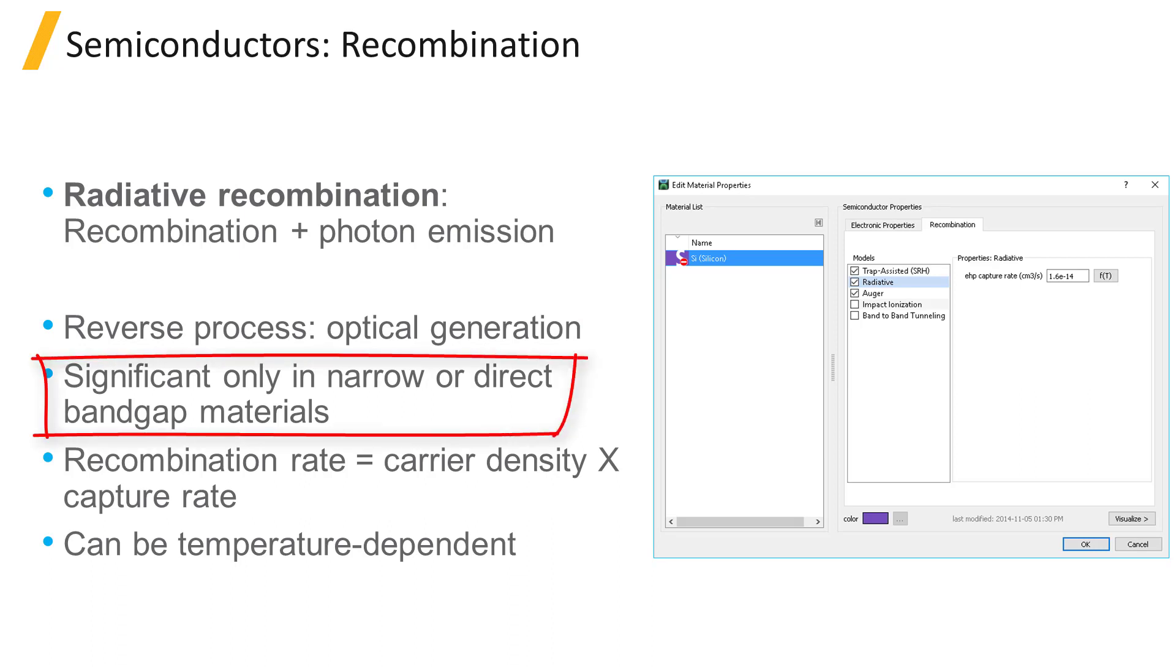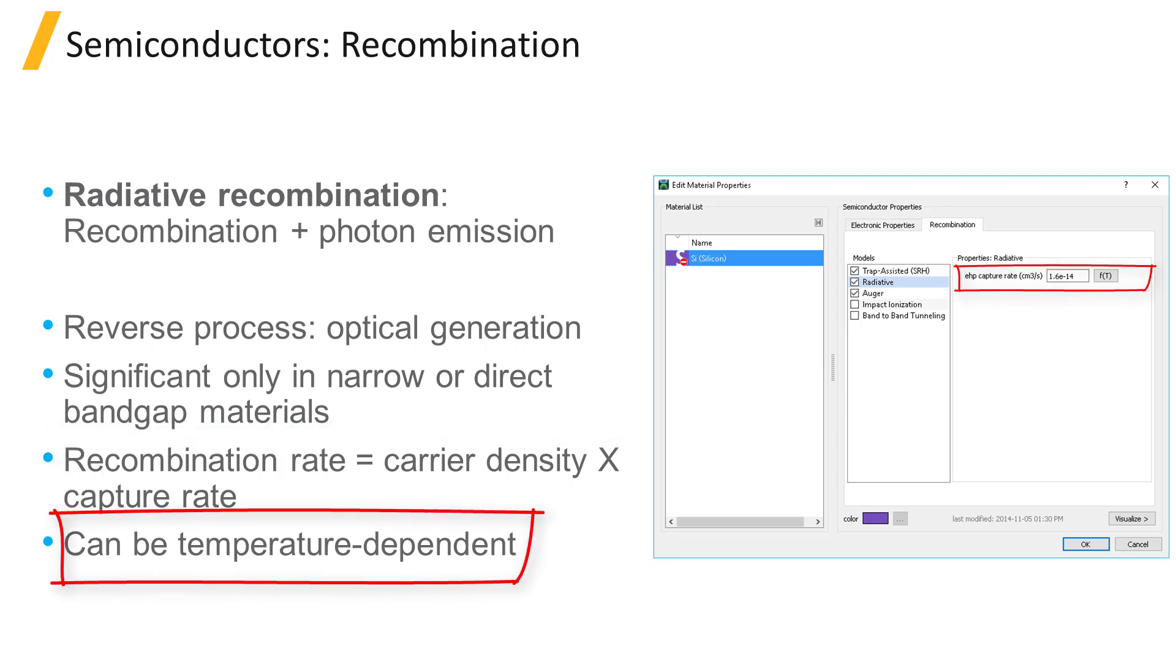Radiative recombination transitions are typically significant only in materials with a narrow band gap, or a band structure that permits direct transitions in momentum, for example gallium arsenide. Radiative recombination is typically negligible in bulk silicon. The recombination rate is determined from the product of a capture rate coefficient and the carrier density. The capture rate coefficient can be modeled either as a constant or dependent on temperature.